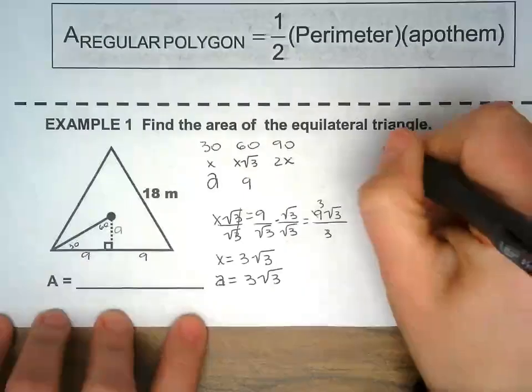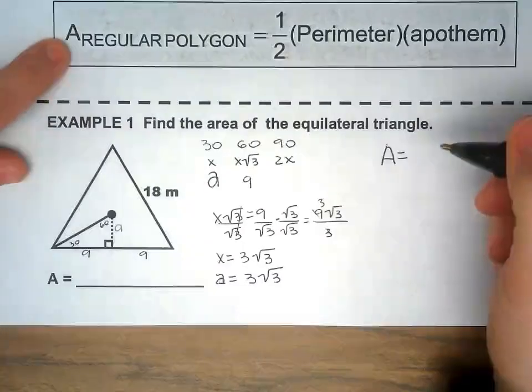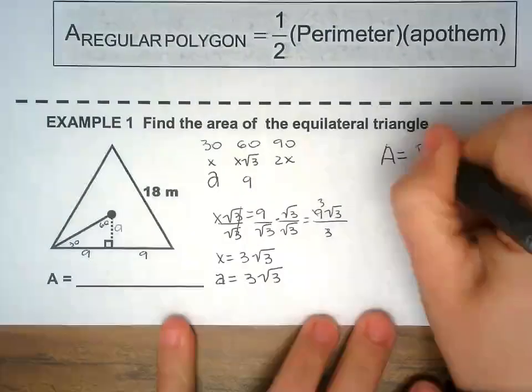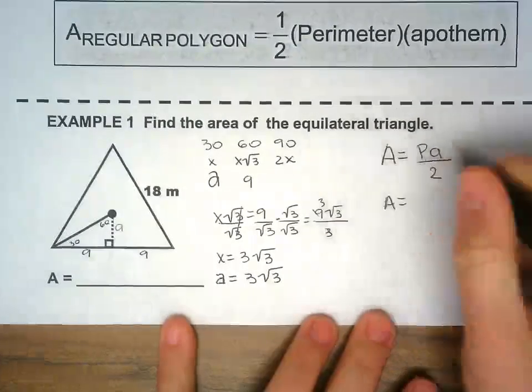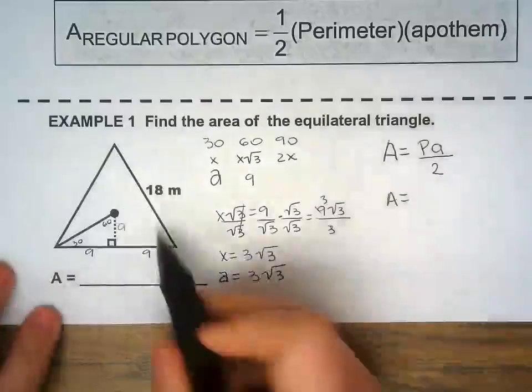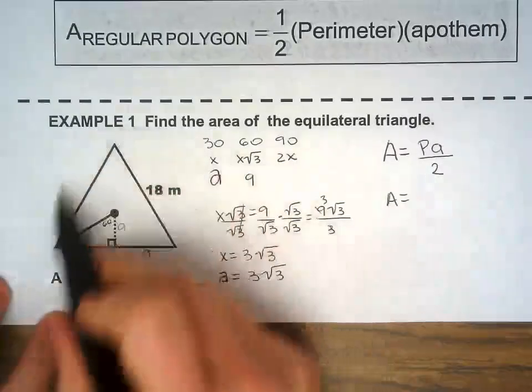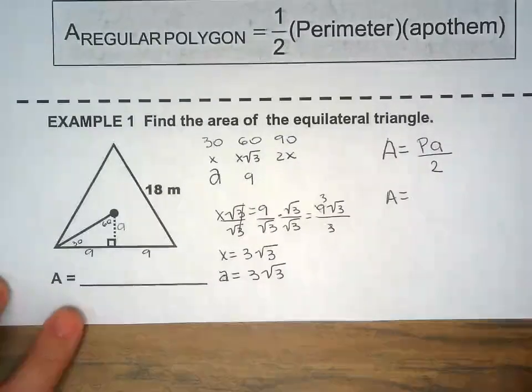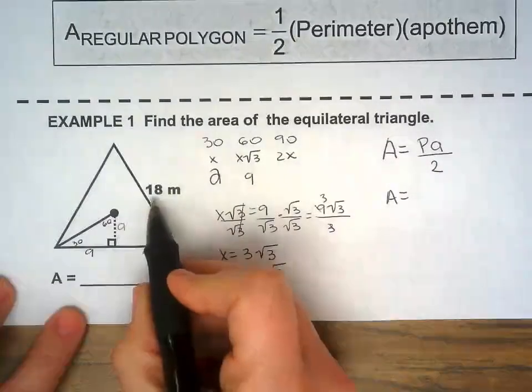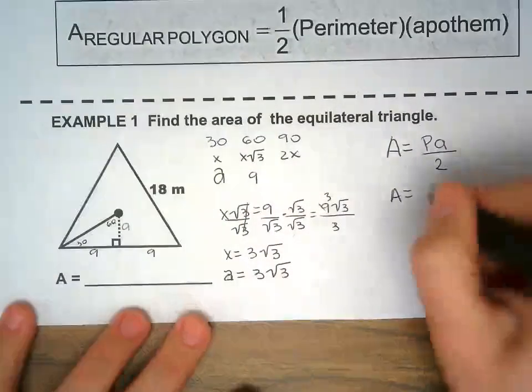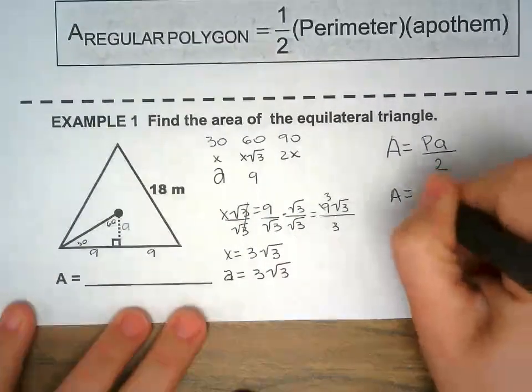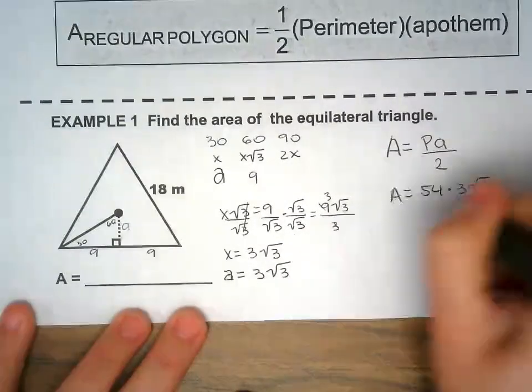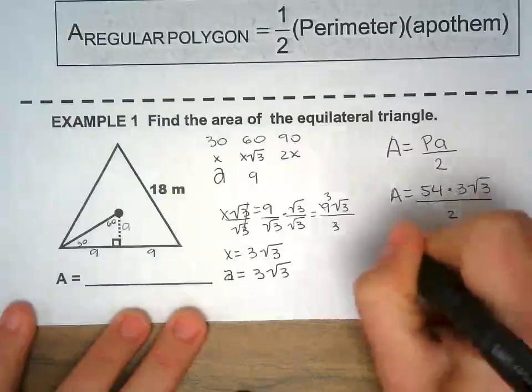Now we can find the area of a regular polygon, in this case a triangle, by doing perimeter times apothem divided by 2. Perimeter of this triangle, you add it all around. And I'm not gonna spend time going over how to find the perimeter of a triangle. You just need to do 18 times 3 to get all around. So 18 times 3 is 54, times the apothem, apothem is right here, divided by 2.